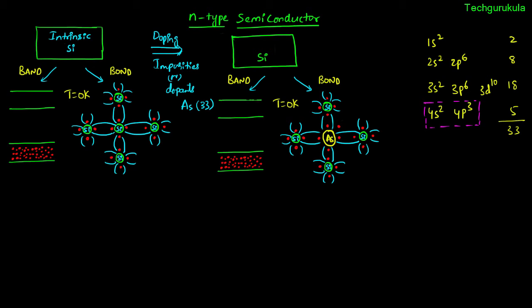How does this doping modify the band model? The arsenic fifth electron is loosely bound, and I am representing the energy level of arsenic here, showing that the electrons are present in these energy levels. We see EC and EV, and this new energy level needs to be named. To understand what to name it, let us see what happens when we increase the temperature.